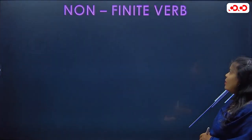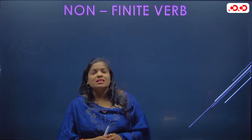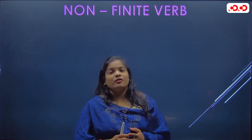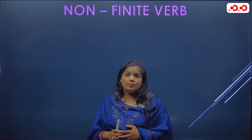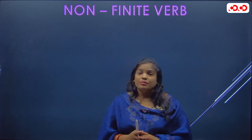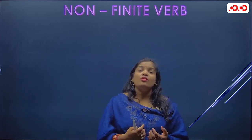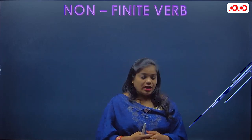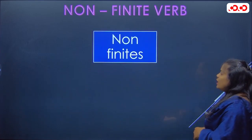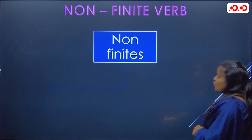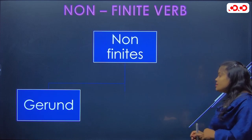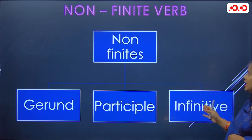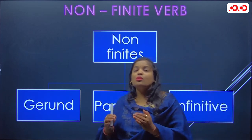Now we will talk about non-finite verbs. All the types we covered so far — transitive, intransitive, primary auxiliary, modal auxiliary — these are all types of finite verbs. What we are about to study now is non-finite. Non-finite verbs exist in three different forms: gerund, participle, and infinitive.